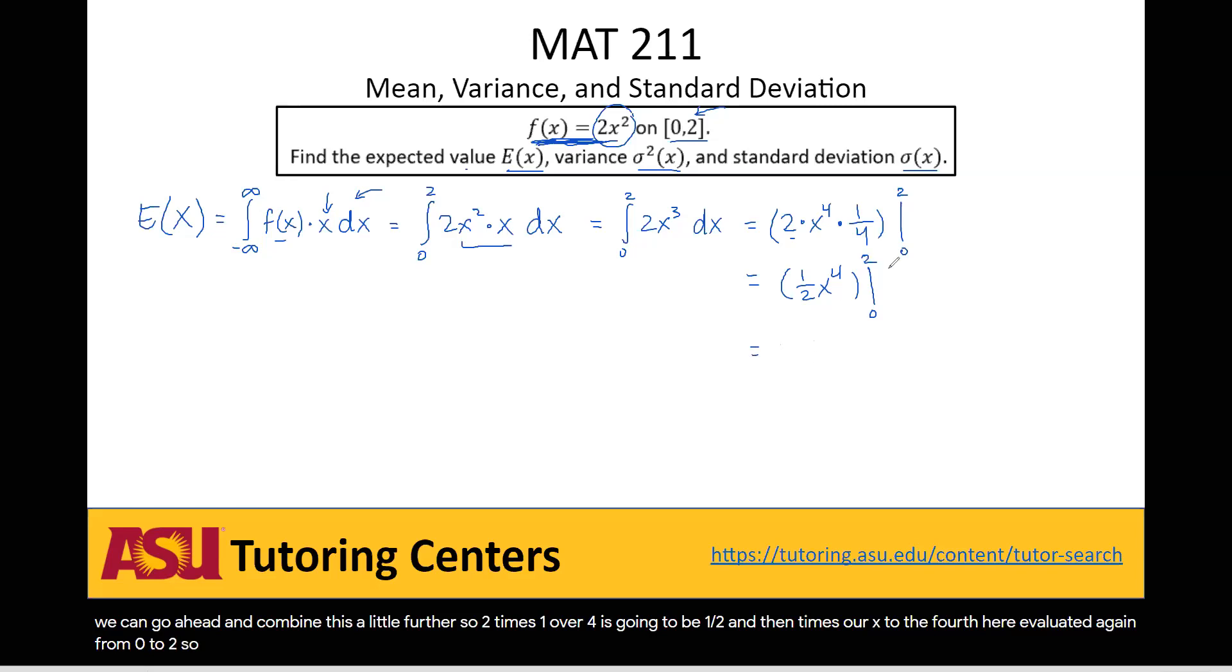So we'll start with our 2 since it's the top. So we're going to have 1 half times 2 to the fourth minus our 1 half times 0 to the fourth. Well, this just equals 0.